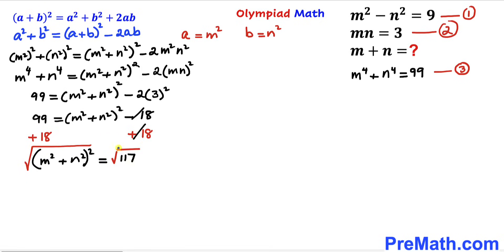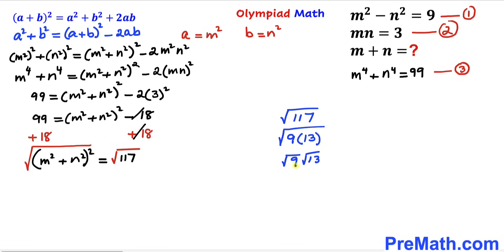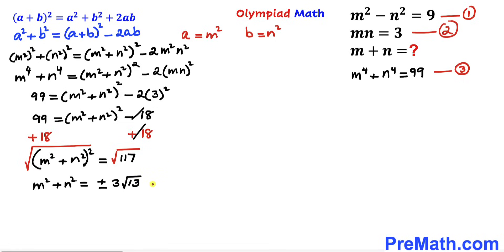Now I'm going to undo this square by taking the square root on both sides. Looking at the square root of 117, we can break it down as 9 times 13, so the square root of 117 equals square root of 9 times square root of 13, which is 3 times square root of 13. Therefore m squared plus n squared equals positive or negative 3 times square root of 13. I'll label this as equation 4.